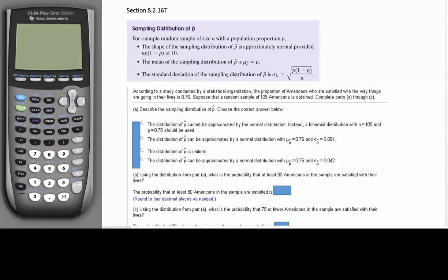Complete parts A through C. So before we dive into A through C, I want to mention first where they show here that the proportion of Americans who are satisfied with the way things are going in their lives is 0.76. That's P. That's our proportion.